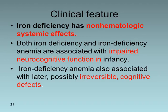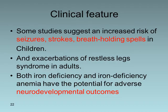Iron deficiency may have non-hematological systemic manifestations. Both iron deficiency and iron deficiency anemia are associated with impaired neurocognitive function in infancy, and iron deficiency anemia is also associated with irreversible cognitive defects later on. Some studies suggest an increased risk of seizures, strokes, and breath-holding attacks in affected children, as well as exacerbation of restless leg syndrome in adults. Both conditions have the potential for adverse neurodevelopmental outcomes.